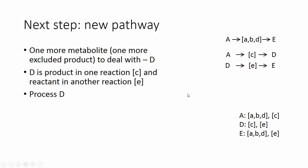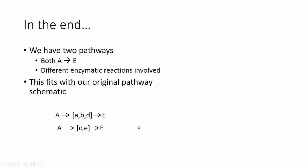So we look at our new pathway. And this is a fairly simple one. Let's process D here. D is the product in one reaction and is the reactant in another reaction, E. It's the product in C and the reactant in E. Let's process that one. So we get rid of those two individual reactions and make A to D. Actually, it should be A to E, rather.